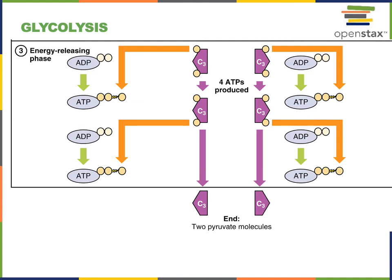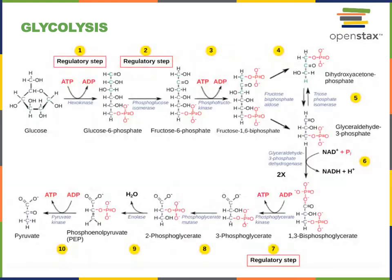Then the energy-releasing phase will generate four molecules of ATP and the final two pyruvate molecules that are the products of glycolysis. There are 10 steps of glycolysis, each catalyzed by a distinct enzyme.